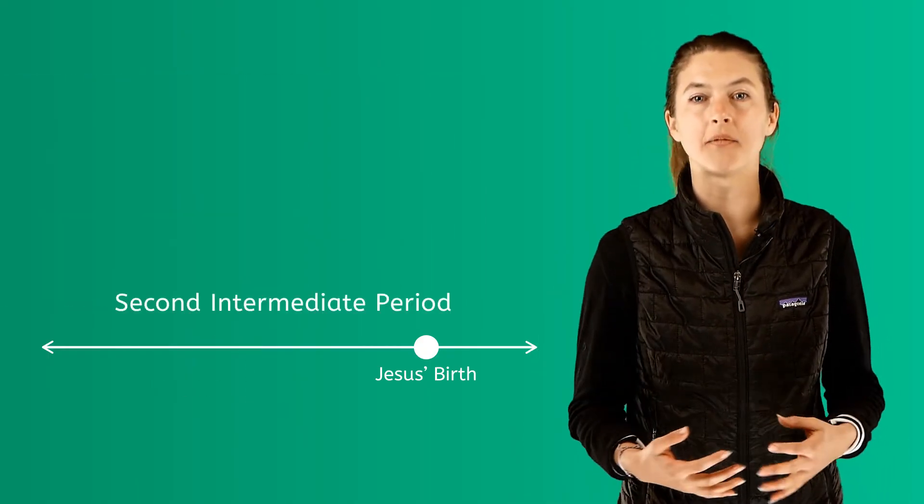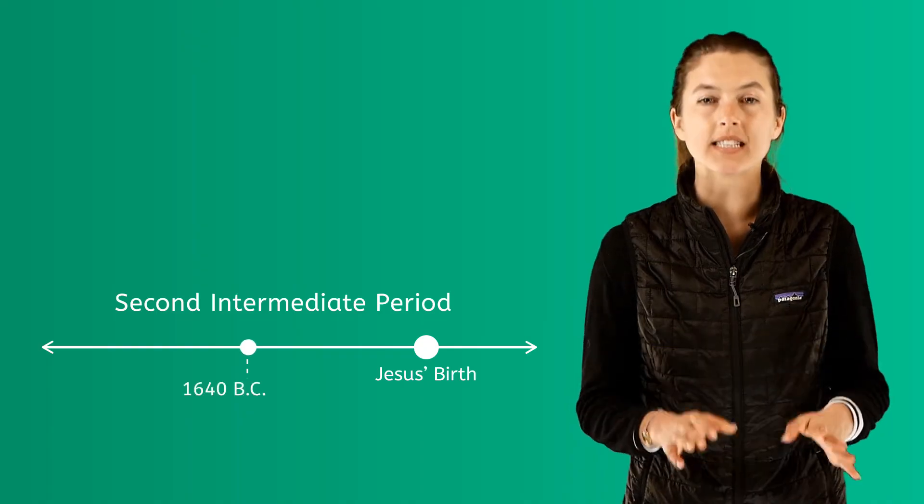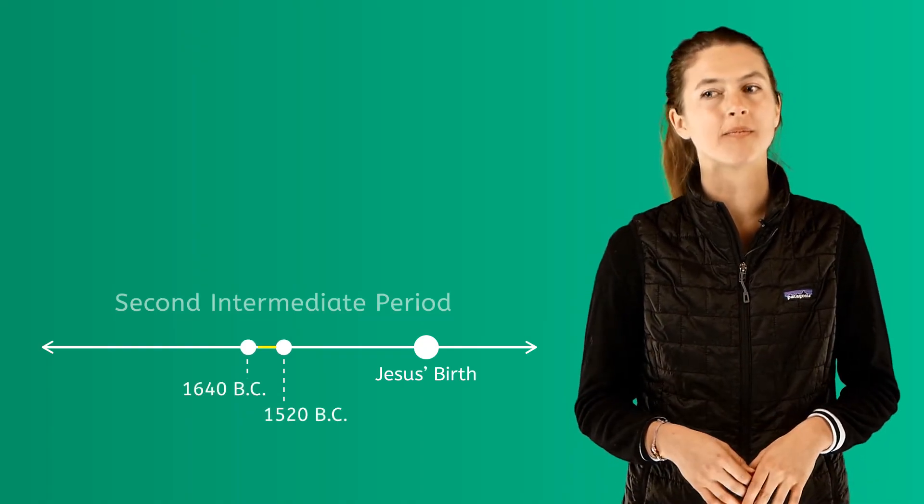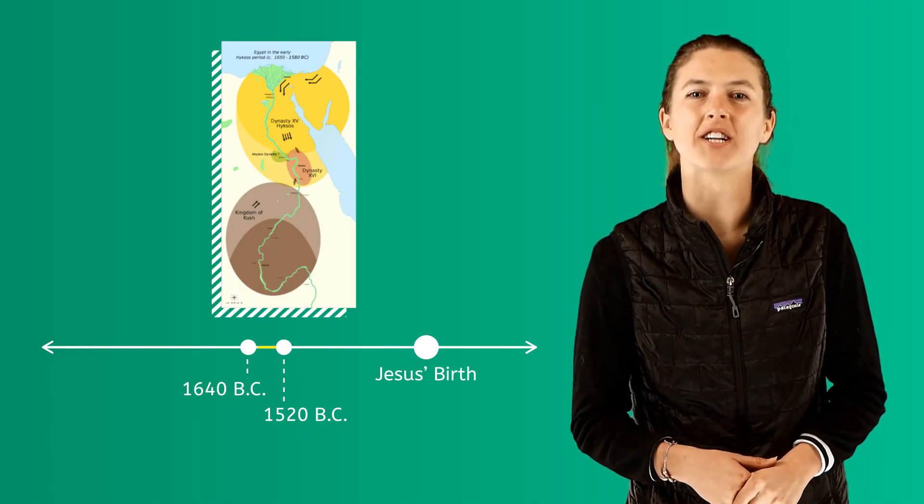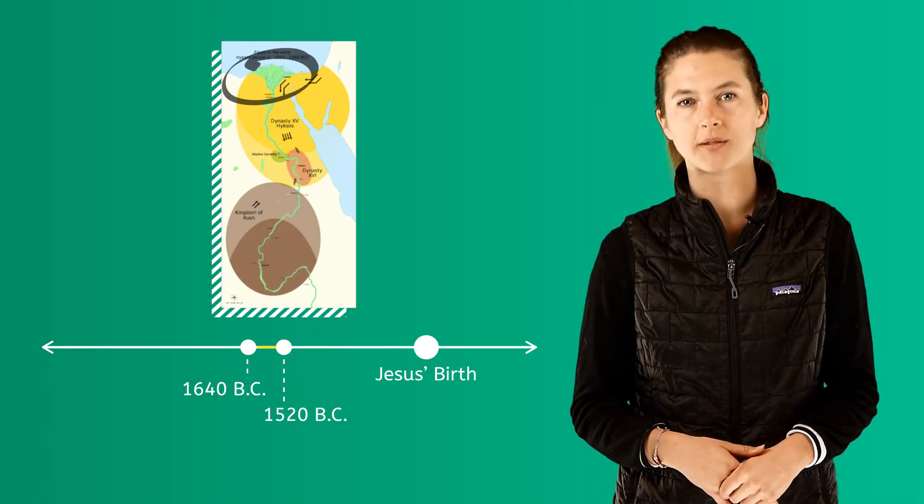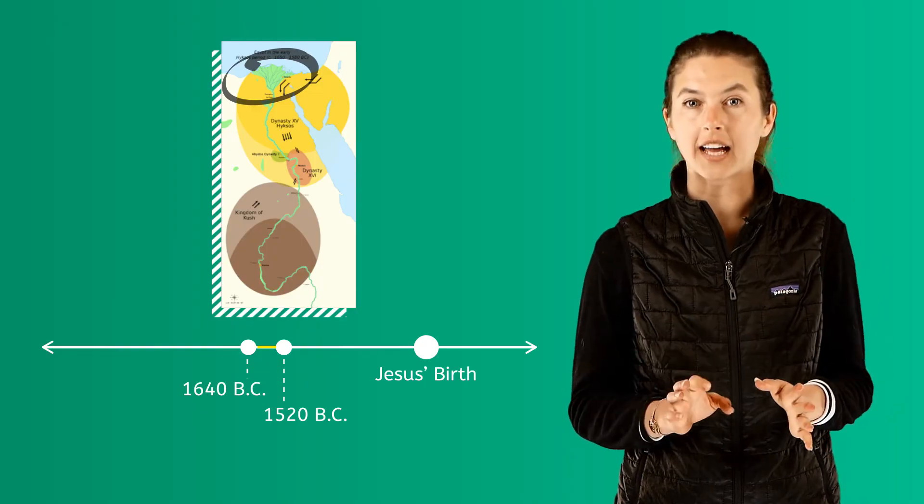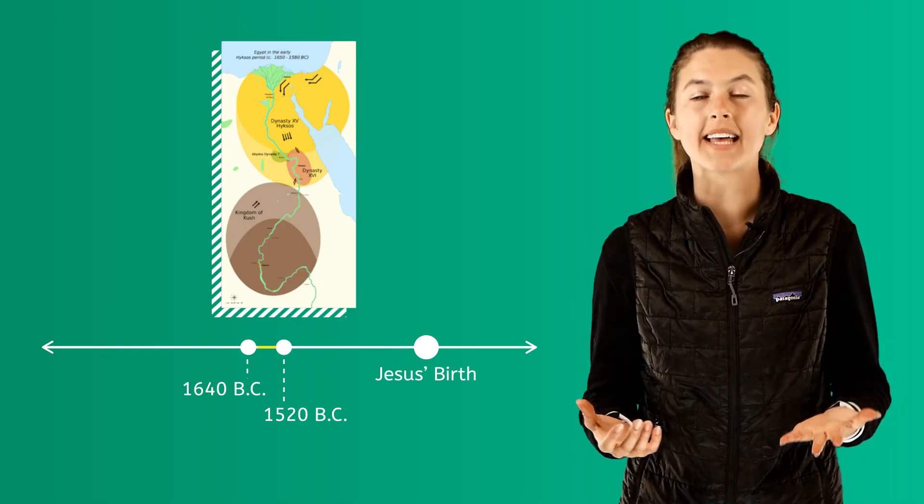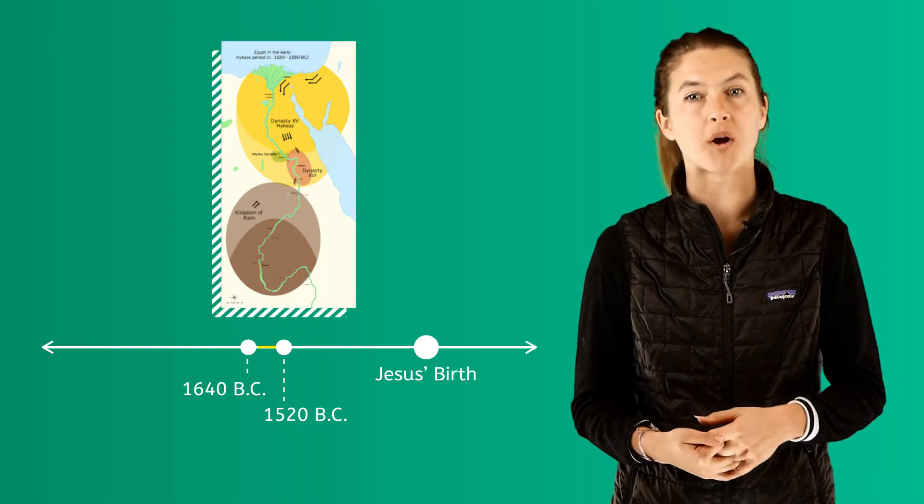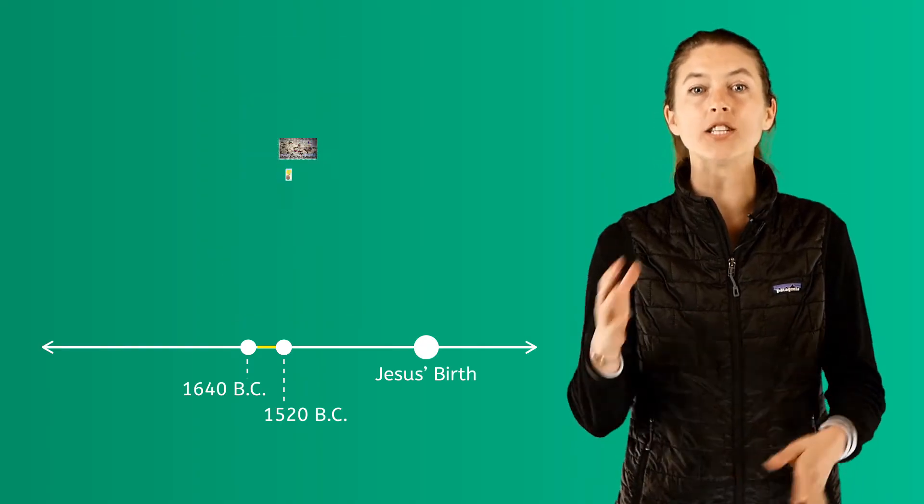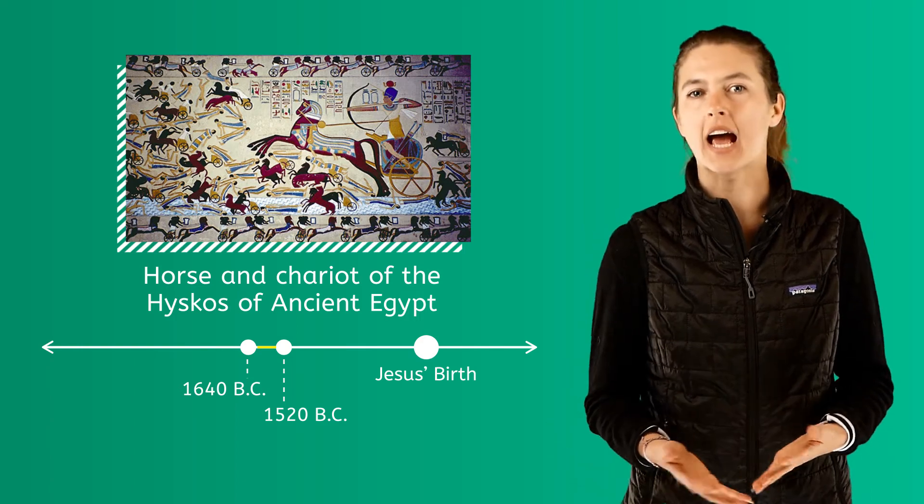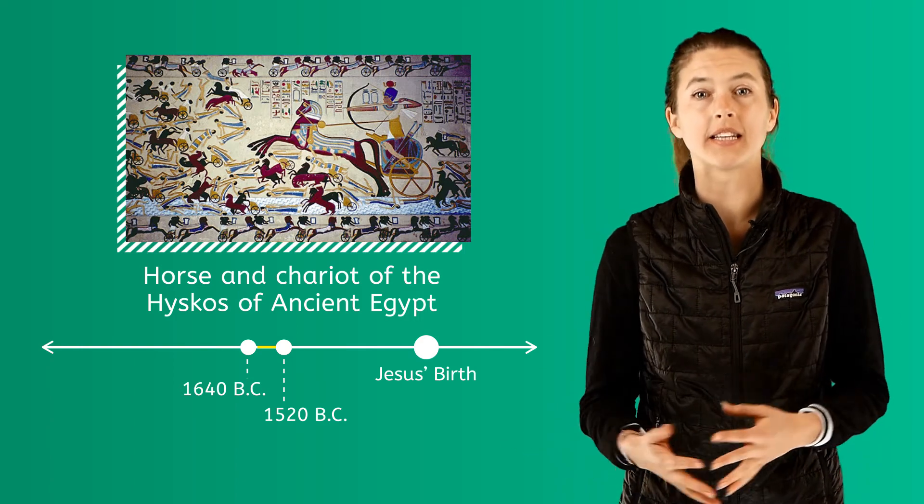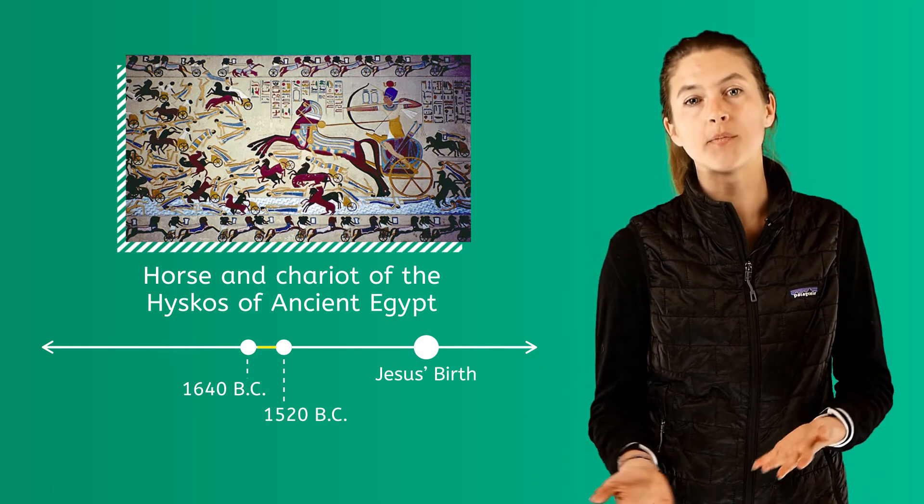The Second Intermediate Period lasted from 1640 BC to 1520 BC. The Hyksos tribe briefly took over control of some of northern Egypt. During their control of the area, Egypt gained new crops, animals, and new ways to make bronze tools. They introduced the horse and chariot to Egypt as well. These new inventions and items would go on to help Egypt in later battles with other groups of people.